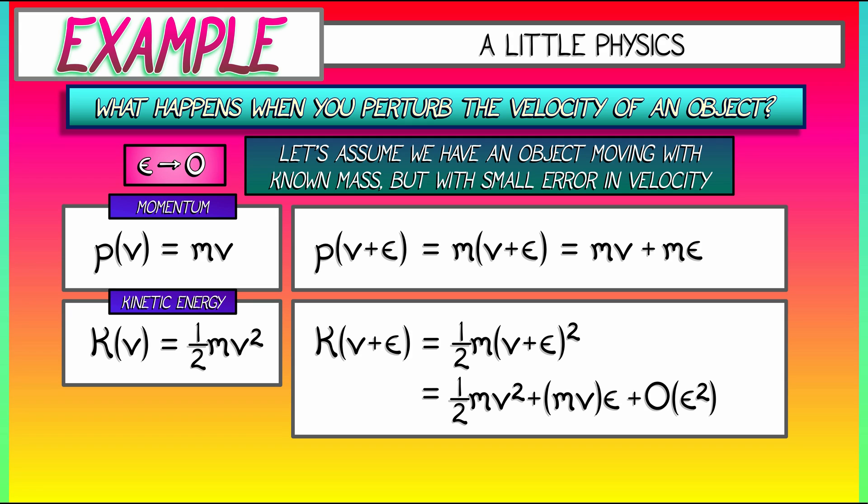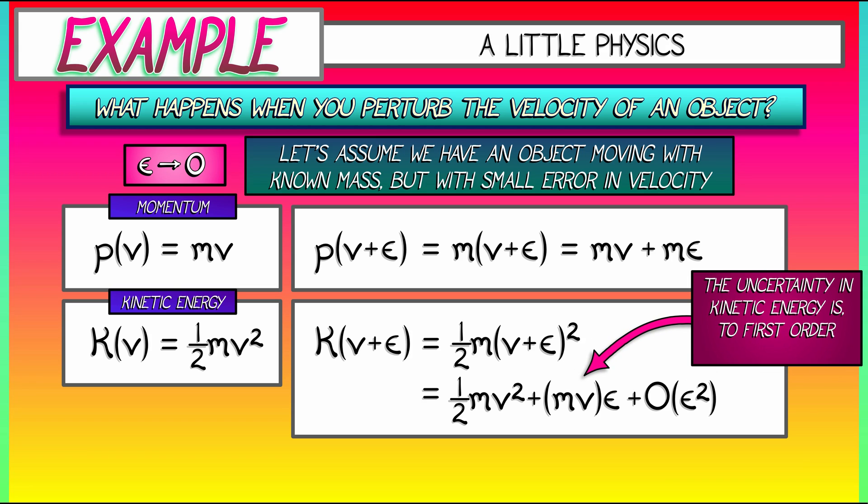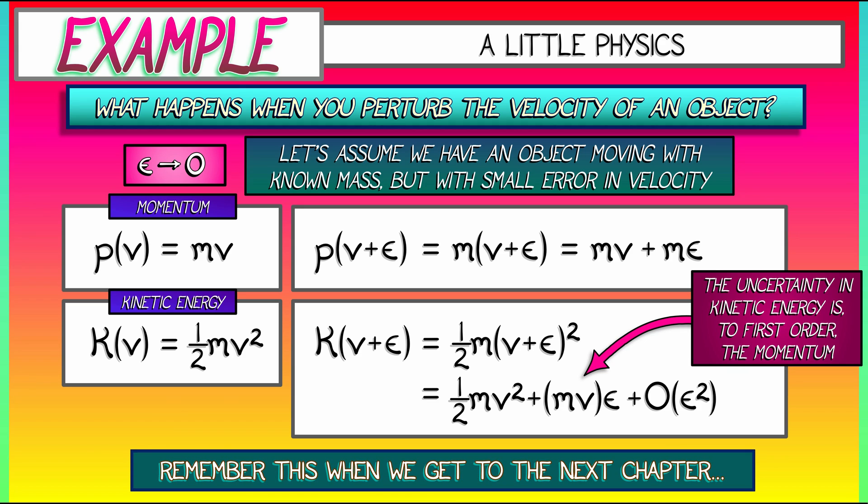So what we see, similar to what we saw before, is that the uncertainty in the kinetic energy to first order scales with the uncertainty in the velocity by the momentum, m times v. That's an interesting perspective. That's not the way that you're used to thinking about things, probably. Remember this when we get to the next chapter. But for now, really what we just want to get across is that big O is a convenient trash can for throwing away stuff that doesn't matter and focusing on stuff that does.